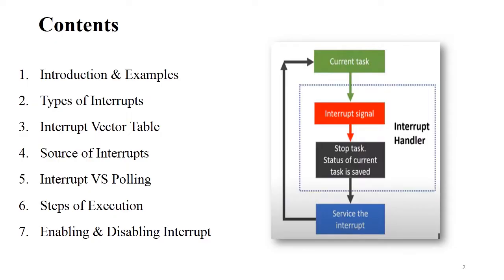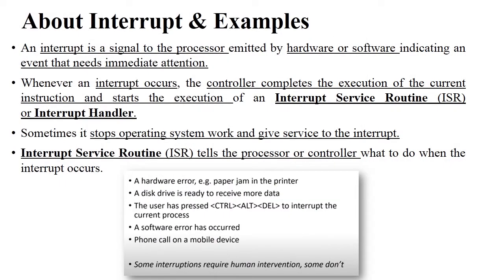This diagram shows the exact working of interrupts — how a microcontroller handles them. Consider that the microcontroller is performing a current task and an interrupt signal is generated. At that time the microcontroller stops the task, saves the current status, and services the interrupt. After servicing the interrupt, it resumes the current task. For example, when you are reading a book and your phone rings, you stop reading, receive the call, and after completing the call you start reading again.